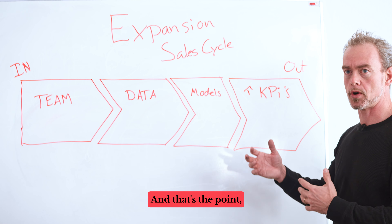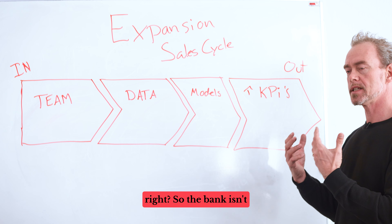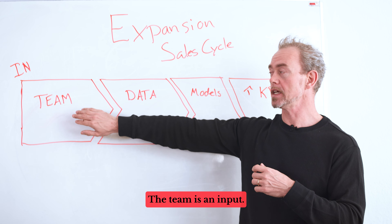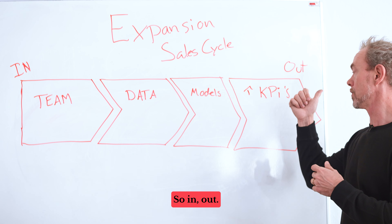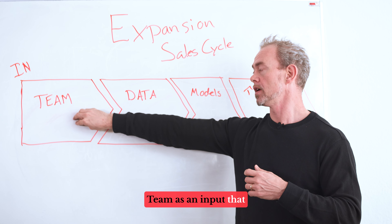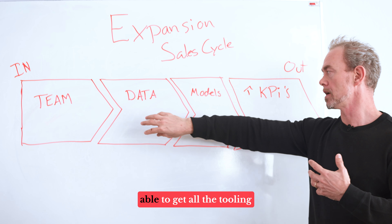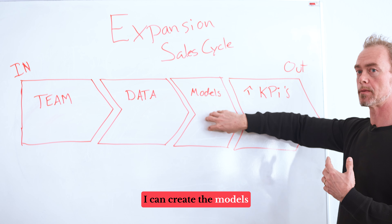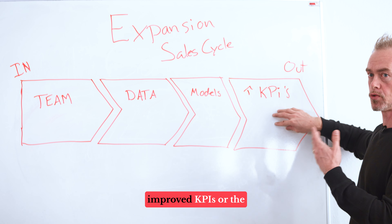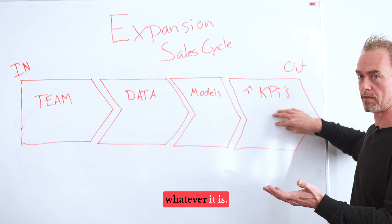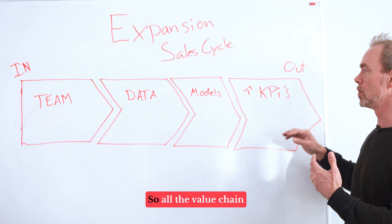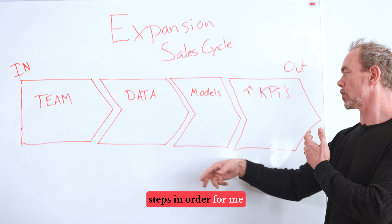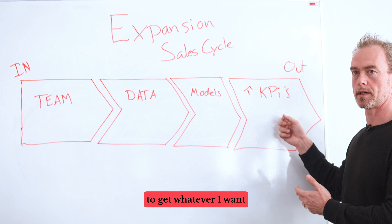The bank isn't doing AI in order to have an AI team. The team is an input. The team is an input that you need in order to get all the tooling and data in place, so that you can create the models, so that you can have improved KPIs or increased revenue. The outcome is all the value chain is working toward — the necessary steps to get whatever you want at the end.